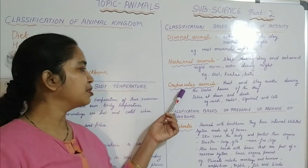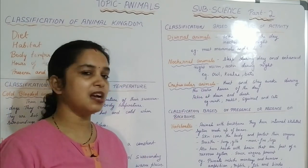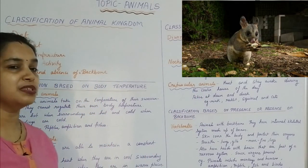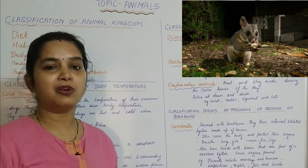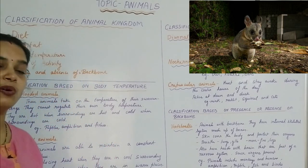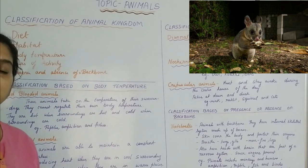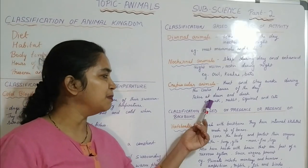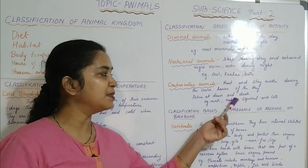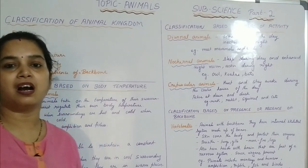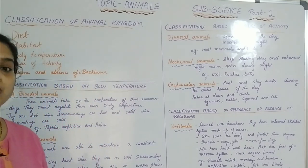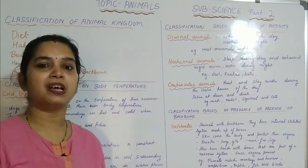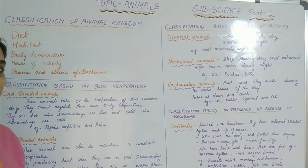Crepuscular animals are those who hunt and stay awake during the cooler hours of the day. The dusk and dawn are generally the cooler hours. These animals include the mink, the rabbit, the squirrel, and cats. They are very active during the cooler hours — generally awake during the dawn and dusk.